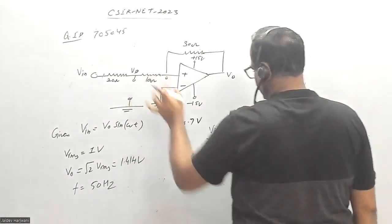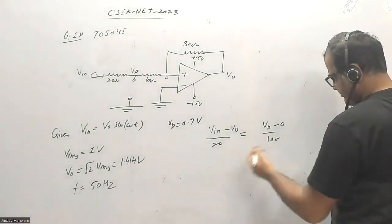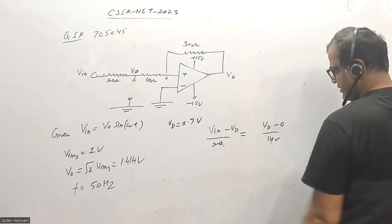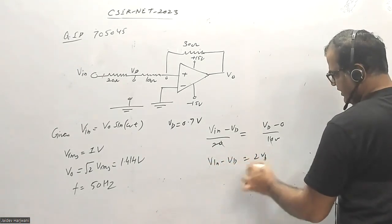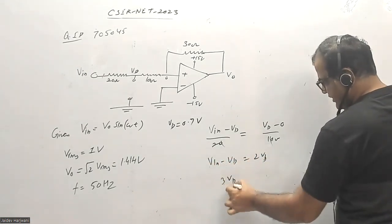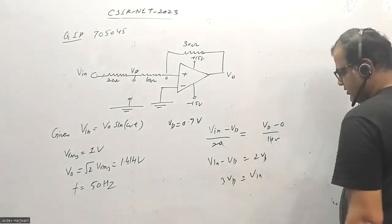3VD equals V input, and the max value of V input is 1.41 volt. So VD will be 1.414 divided by 3.